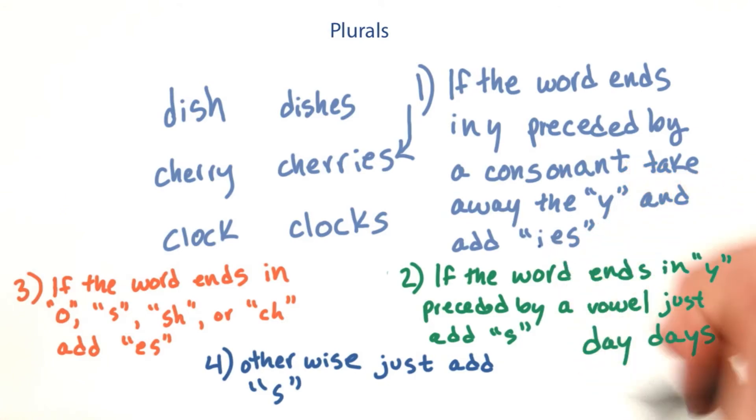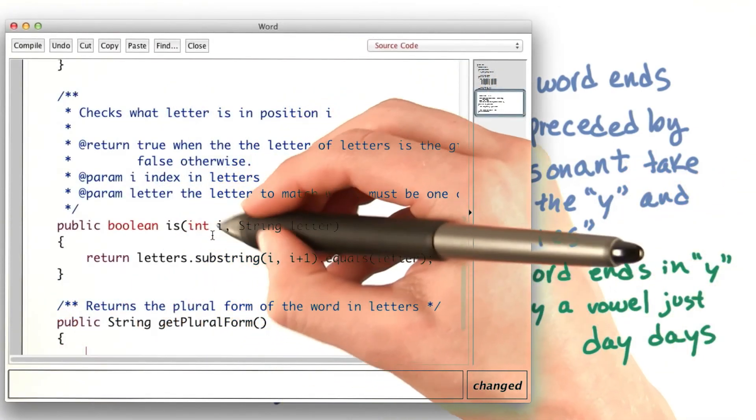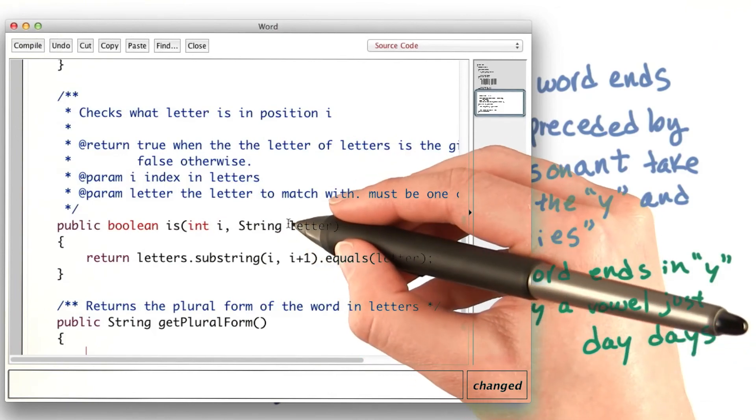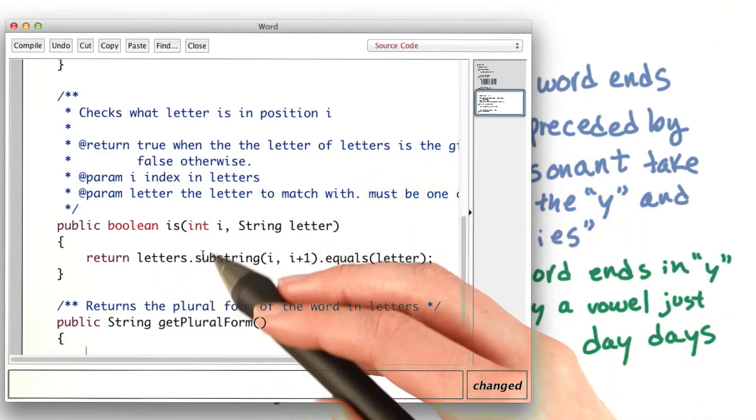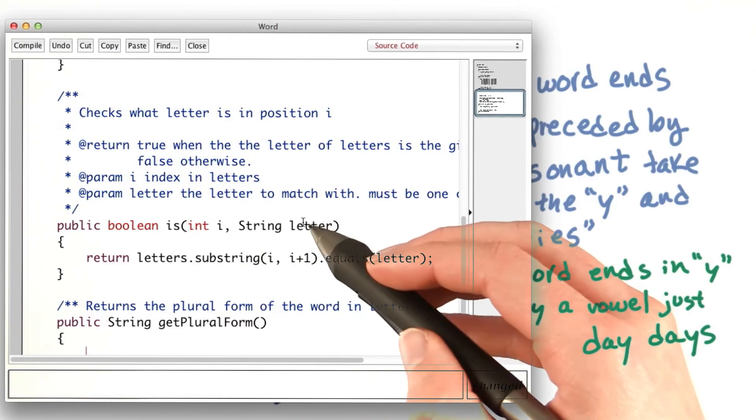As well as another method that I added. The method IS takes an index and a letter to compare it to, and returns true if the letter at that index matches the letter.